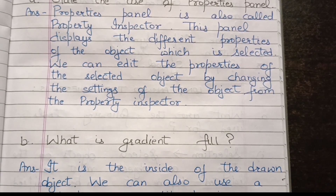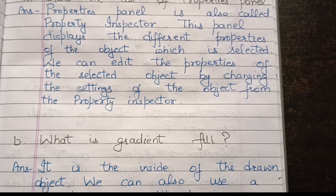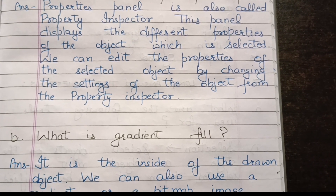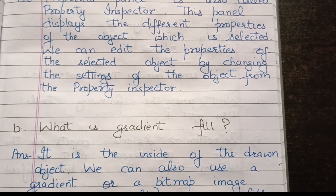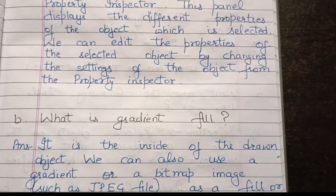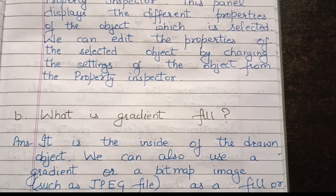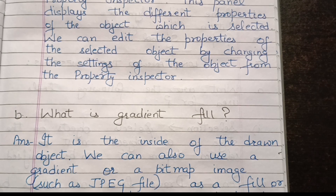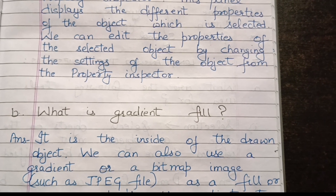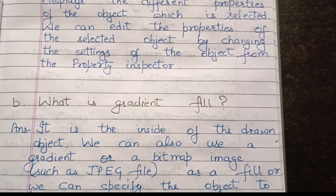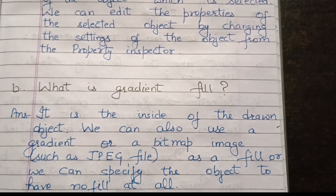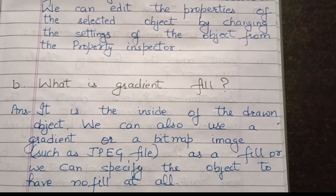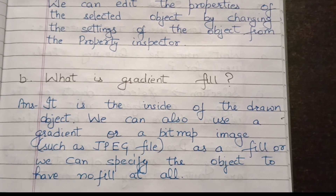Next: What is gradient fill? It is the inside of the drawn object. We can also use a gradient or a bitmap image such as a JPEG file as a fill, or we can specify the object to have no fill at all.